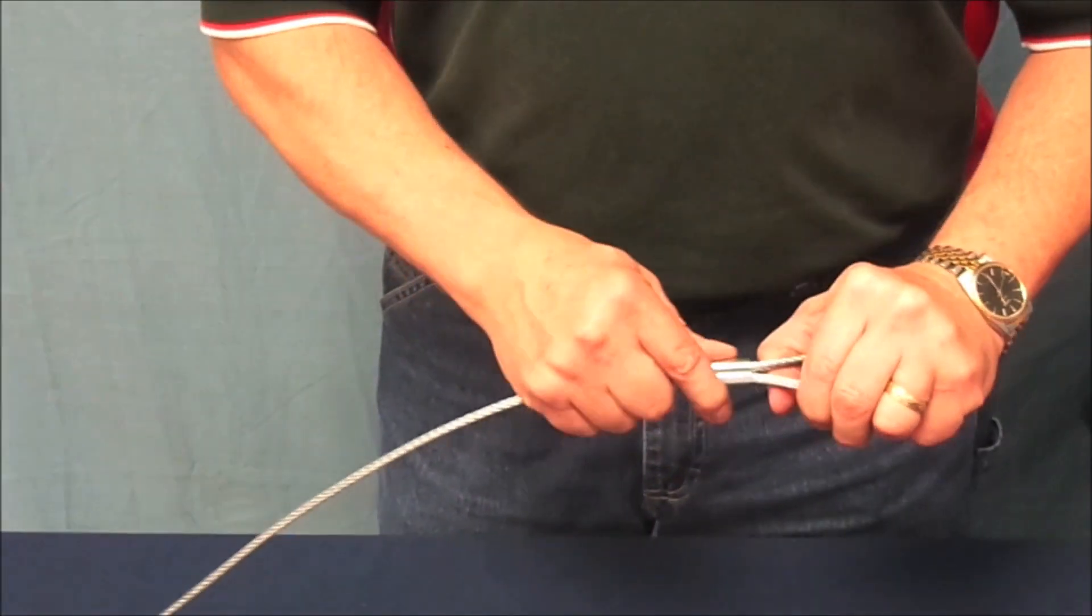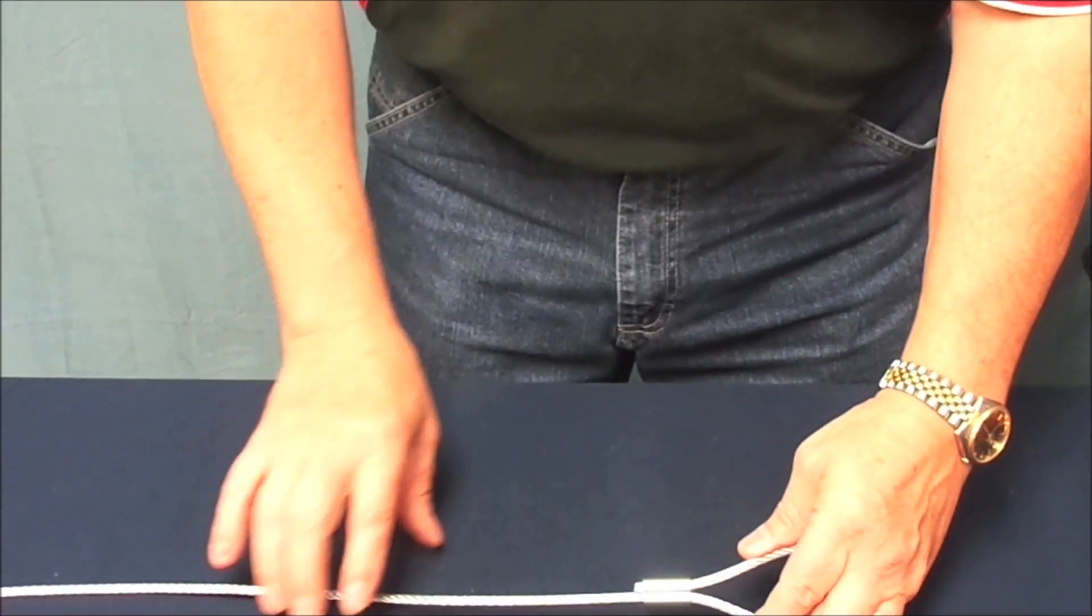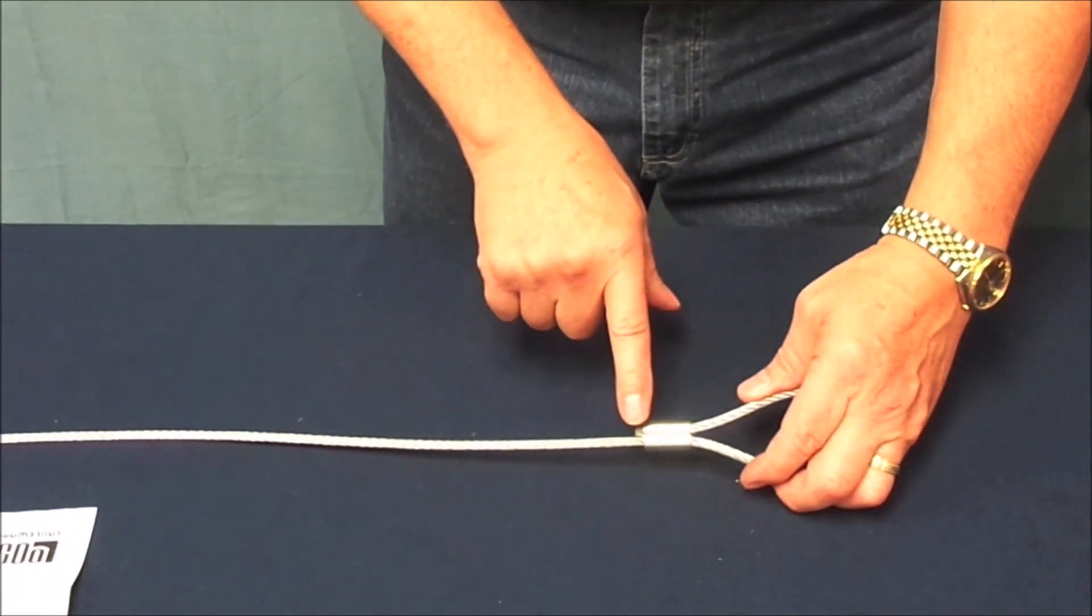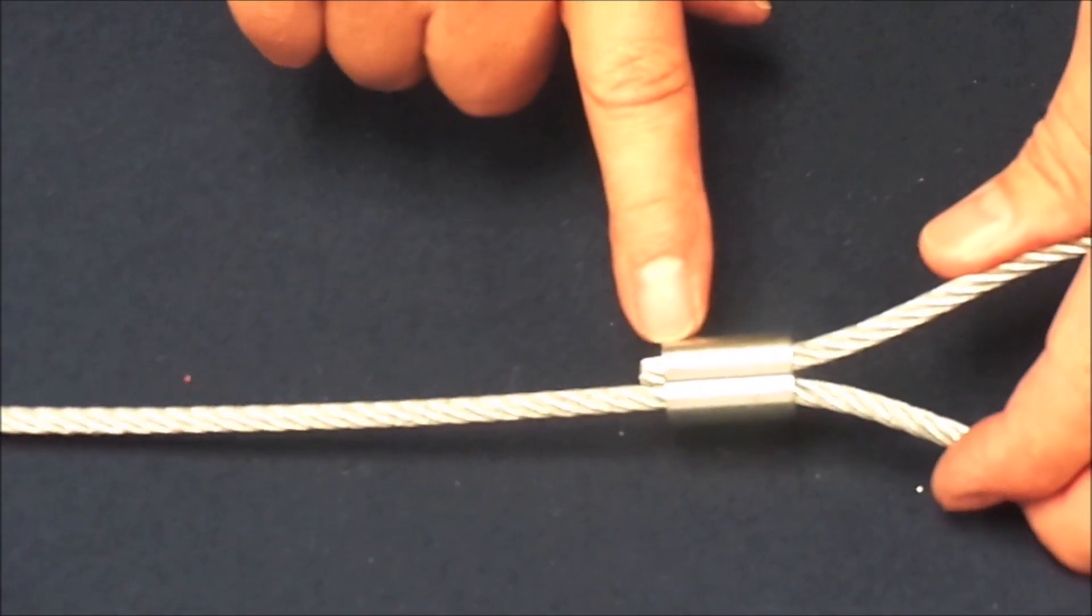It is important to note that whenever attaching a fitting of this type that you leave a tail at least one cable diameter protruding from the fitting. This ensures that the cable is compressed over the entire length of the fitting.